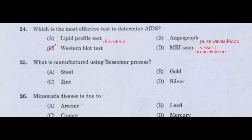5th question: What is manufactured using the Bessemer process? Option A: Steel. Option B: Gold. Option C: Zinc. Option D: Silver. Answer: Option A, Steel.